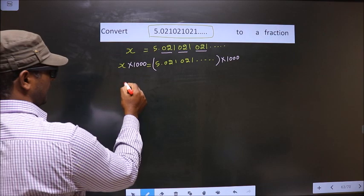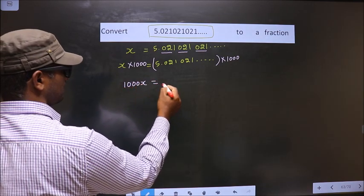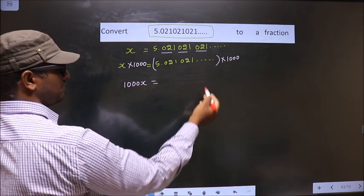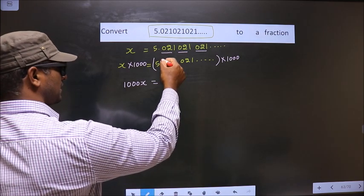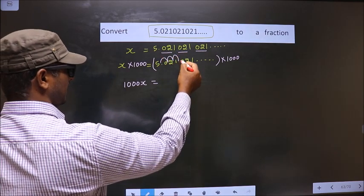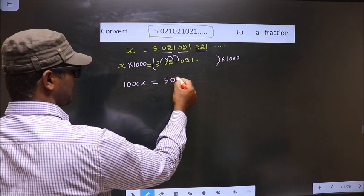Here I get 1000x equal to... When I multiply this with 1000, the decimal will shift three places to the right, making it 5021.